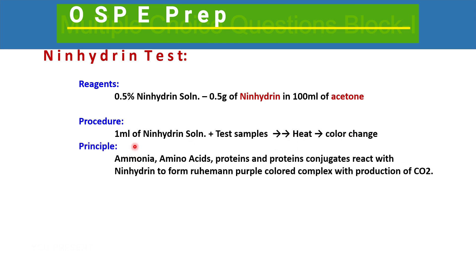The principle of this test is that any nitrogen-containing products such as amino acids, proteins, peptones, or conjugated proteins react with ninhydrin solution. The ninhydrin solution contains 0.5 grams of ninhydrin in 100 ml of acetone. The test sample — which may contain ammonia, amino acids, proteins, conjugated proteins, or peptones — reacts with ninhydrin upon heating to form a purple-colored complex with the production of carbon dioxide.